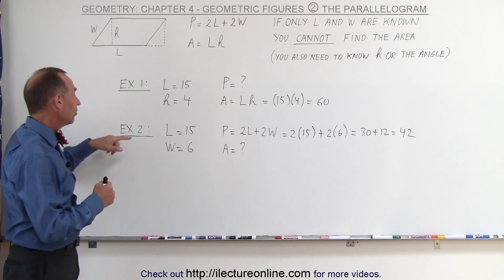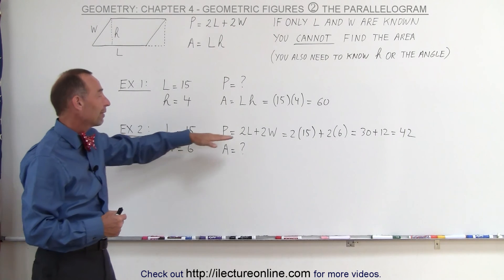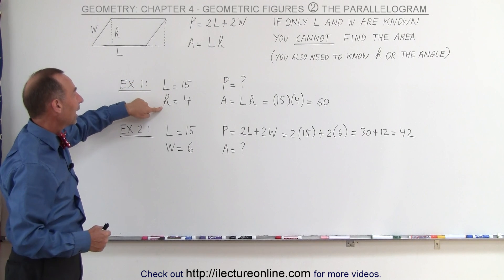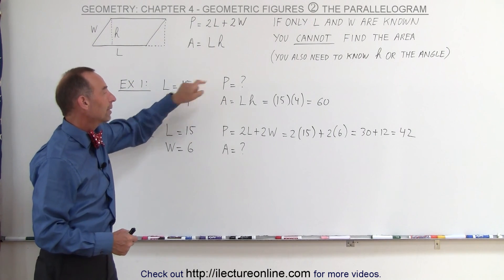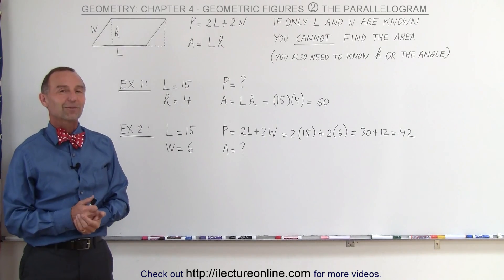So, when the length of the long side and the length of the short side are given, you can find the perimeter but not the area. In the example where the length of the long side and the height was given, you can find the area but not the perimeter. And that's how we deal with parallelograms.